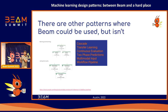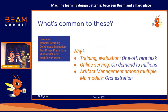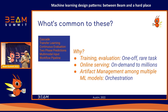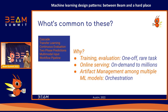Why don't we see Beam being used for those? Training and evaluation are typically one-off and rare tasks — not ongoing. Many of these things require on-demand serving where you need to scale to millions of requests on demand, so you can't afford to buffer things up. And many patterns involve multiple containers with artifact management between them — it's really orchestration — and that is problematic for Beam.